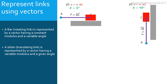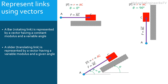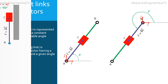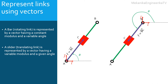If the slider is translating in the vertical direction, the vector position is oriented vertically with an angle equal to 90 degrees. If the ground is inclined with angle phi, the vector position of the slider will also be inclined by the same angle. If slider C is translating along a bar AB, it is possible to consider either A or B as the origin of the vector position. In both cases, the vector angle can be determined knowing the bar angle.